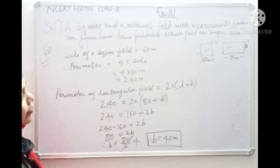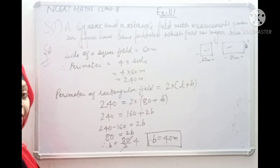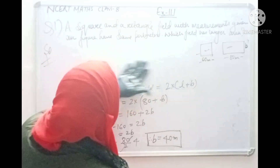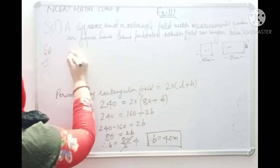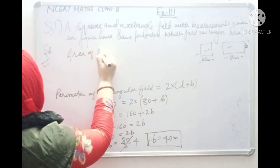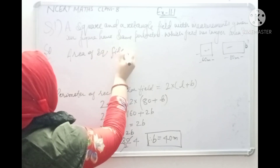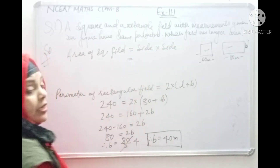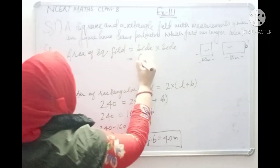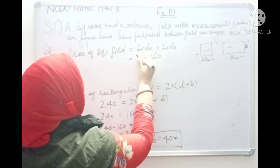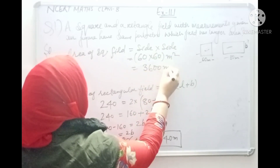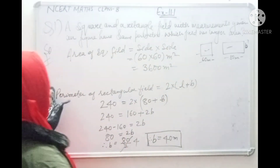Now the question asks which field has larger area, so we need to find the area of both fields. Area of the square field is equal to side into side — that is 60 into 60 meter square. 6 sixes are 36, so 3600 meter square is the area of the square field.